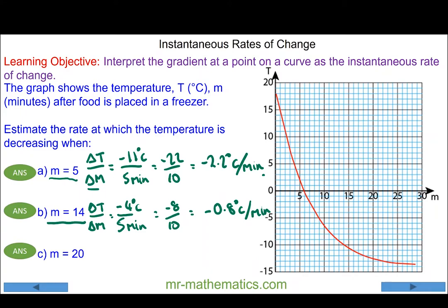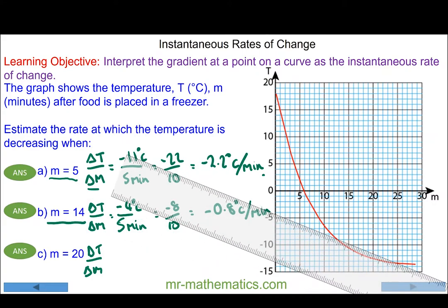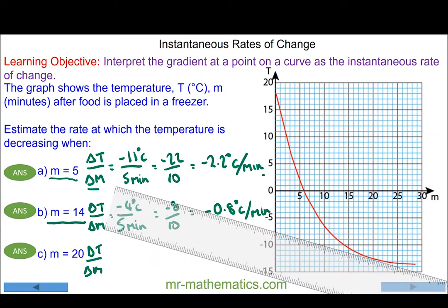Finally, we'll look at the rate of change of temperature after 20 minutes. Again, by using the change in vertical divided by the change in horizontal. We'll draw our tangent at 20 minutes.